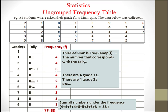The third column is frequency, labeled f — the number that corresponds with the tally. Tally four means frequency four; tally six means frequency six. So the frequencies are: four, four, six, four, six, five, three, three, three. The last row for this column is the sum of all frequencies: four plus four plus six plus four and so on, giving you 38 — which matches the number of data values collected.